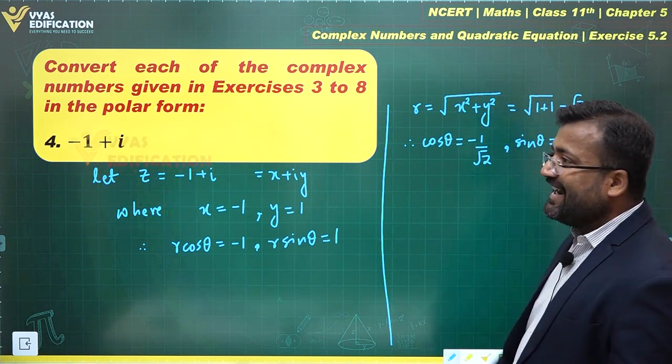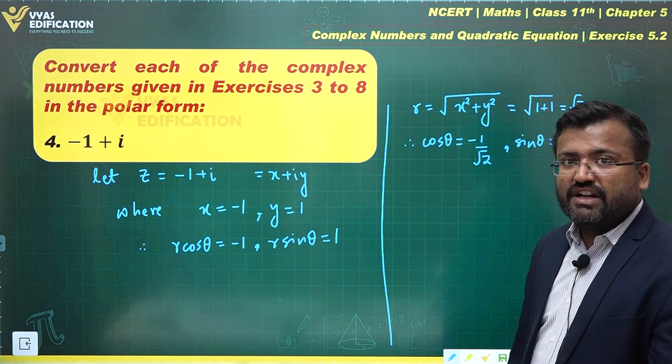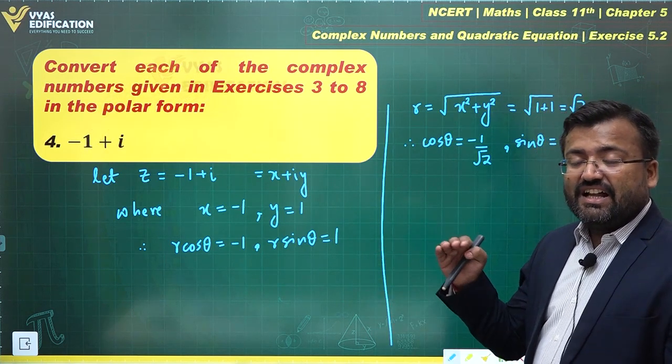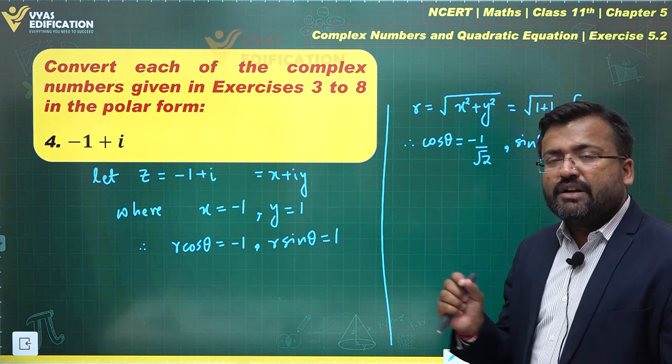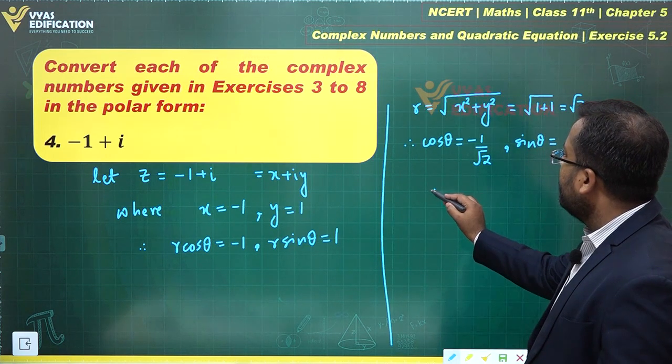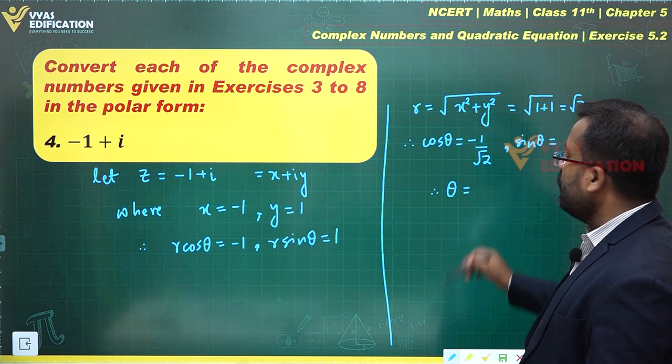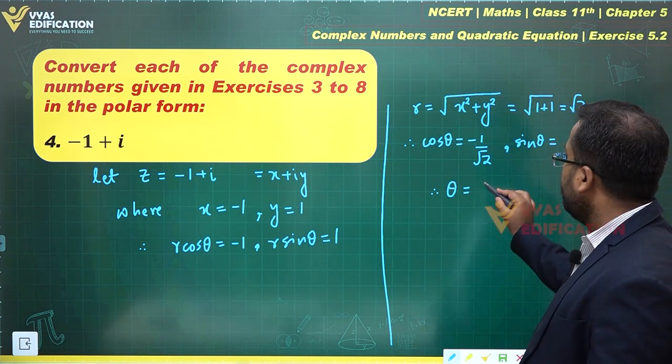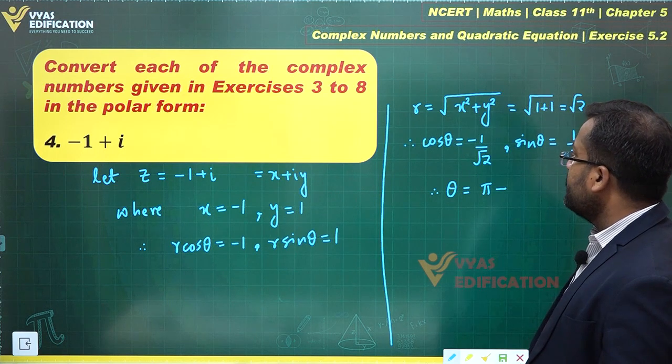Cos theta negative implies, sin theta positive implies that the point P actually lies in the second quadrant. And therefore theta becomes equal to pi minus alpha, and what is alpha?